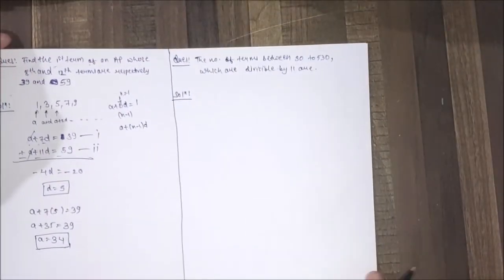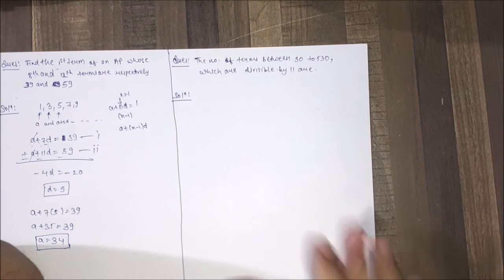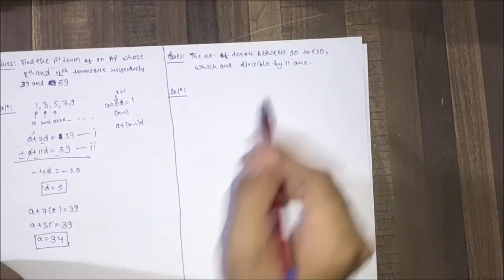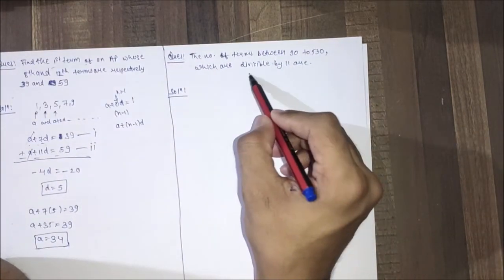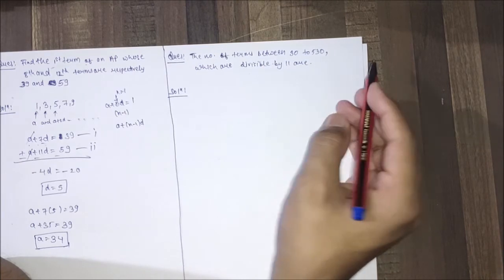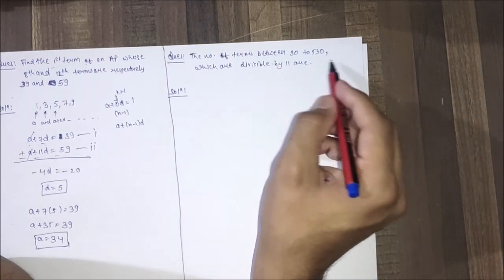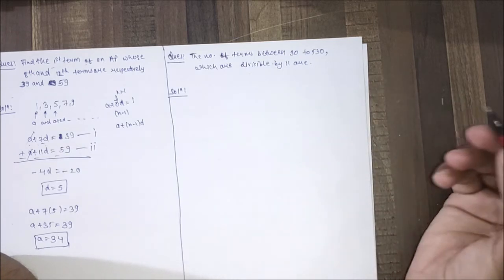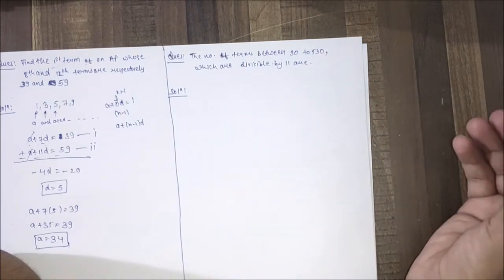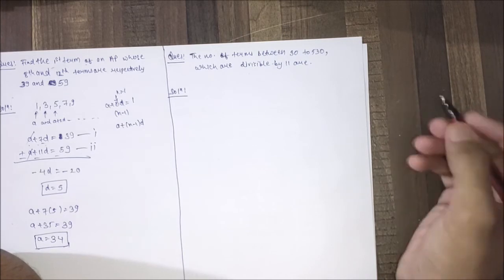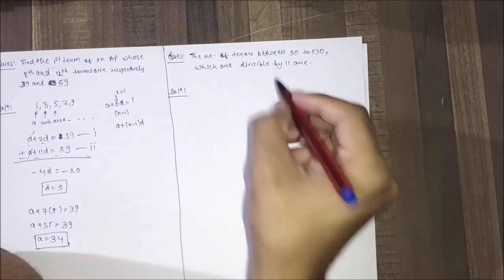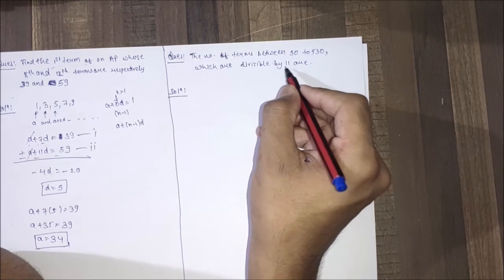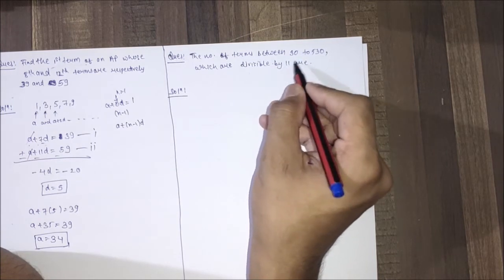Let's solve one more question. The question is: find the number of terms between 30 to 530 which are divisible by 11. In order to solve this type of question, first we will have to find out the first term and the last term of the AP.